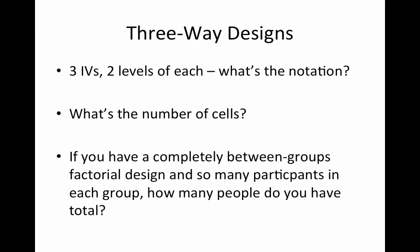In a three-way design, we're going to have three independent variables instead of two. If we had three independent variables with two levels each, we would have a two-by-two-by-two design. The number of cells would be two times two times two, which equals eight.